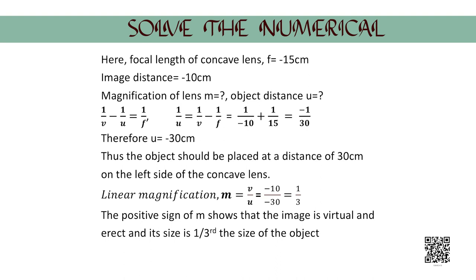Thus, the object should be placed at a distance of 30 cm on the left side of the concave lens. Moving on to finding the linear magnification m, given by m equals v/u equals minus 10 upon minus 30 equals 1/3. Therefore, the magnification turns out to be 1/3. The positive sign of magnification shows that the image is virtual and erect, and the size of the image is one third the size of the object.